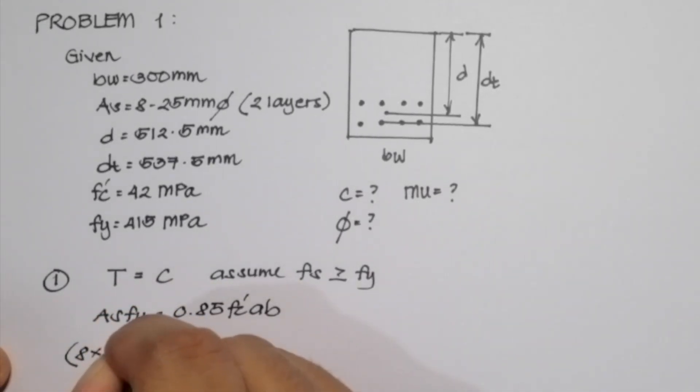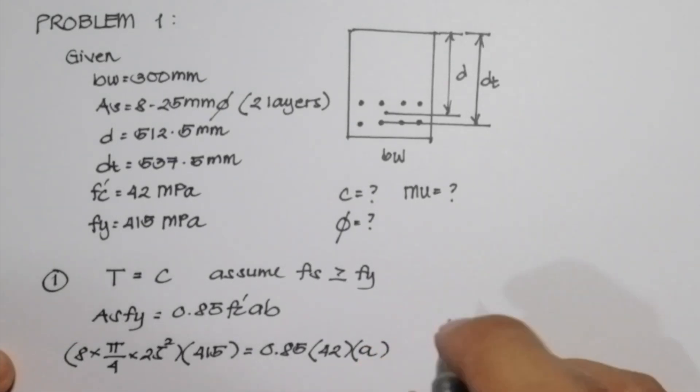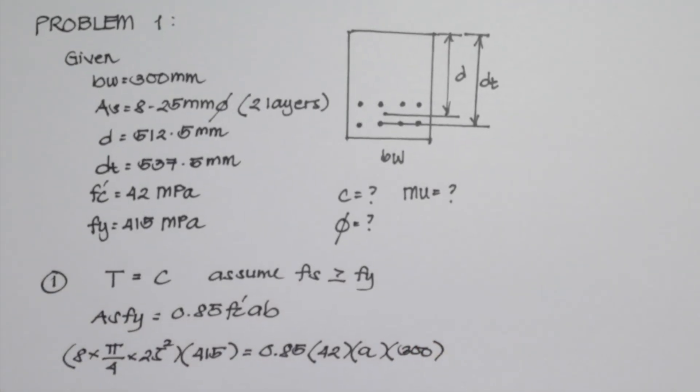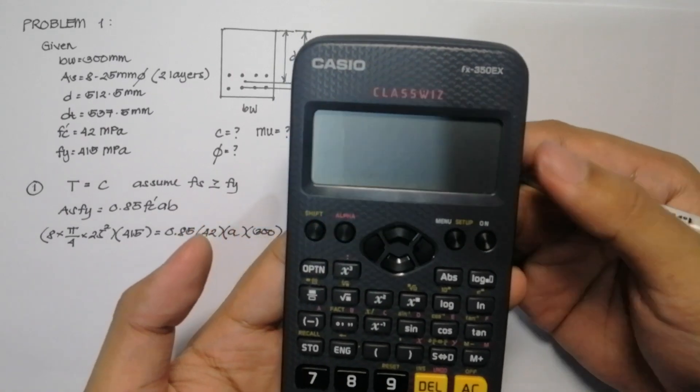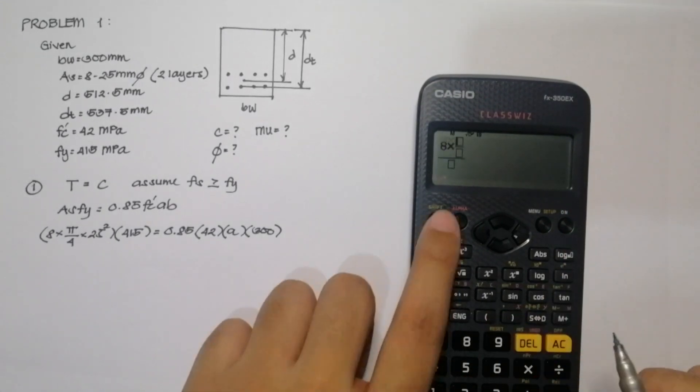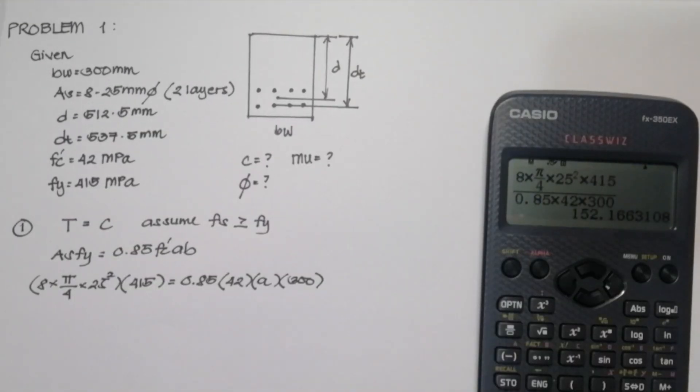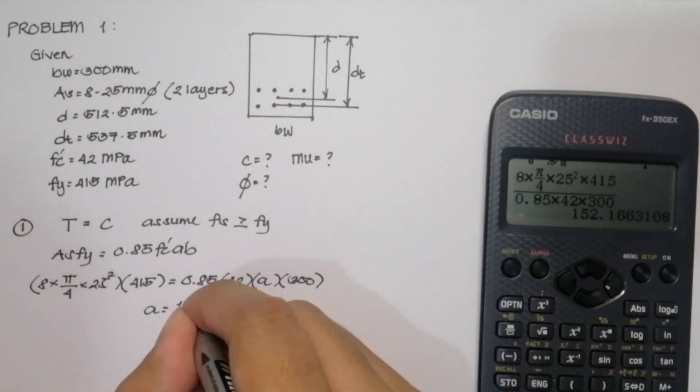Our As is composed of 8 25mm diameter reinforcing bars and our Fy is 415 MPa, is equal to 0.85, our compressive strength of the concrete is 42 MPa. Our A is our unknown and we will solve this first, and our B is equal to 300mm, the base of our beam. By calculating, I will use Casio FX350EX as the recommended calculator by the PRC. 152.166, so that is the value of our depth of the compression block.